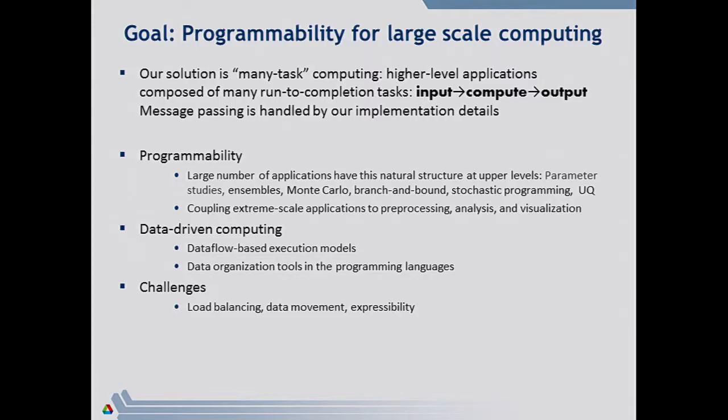We're going to talk about the high-performance implementation of Swift, which we call Swift T, to differentiate it from the previous Swift, which is Swift K. That ties into the name of the runtime underneath. Karajan is the underlying runtime for Swift K. We have a new runtime for Swift T that's built on top of MPI. The idea is to translate a Swift script into an MPI program, essentially, that links against our libraries, and then you deploy the whole thing on a big machine like Mira or Cetus.